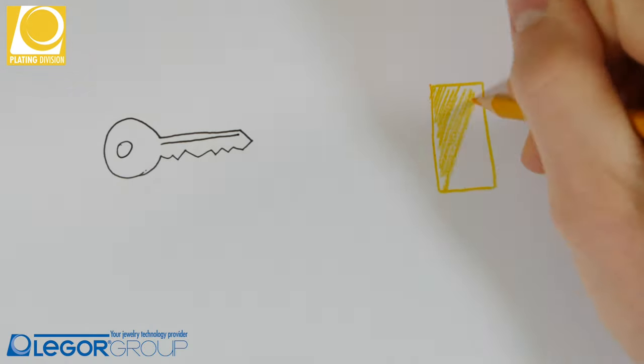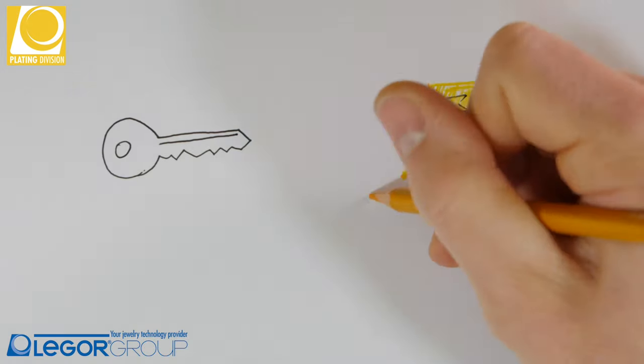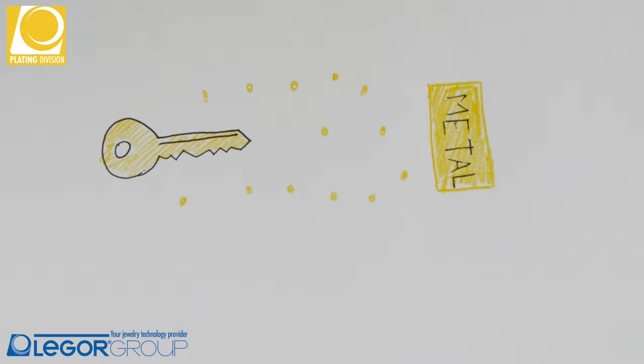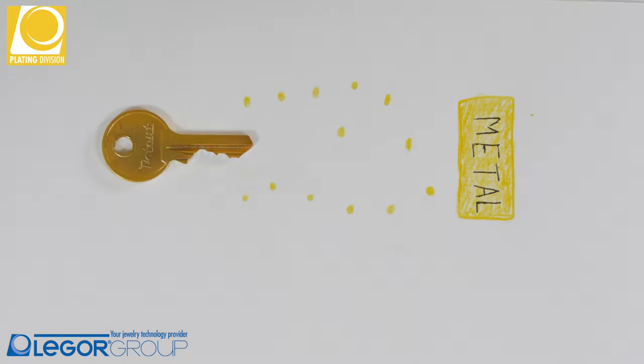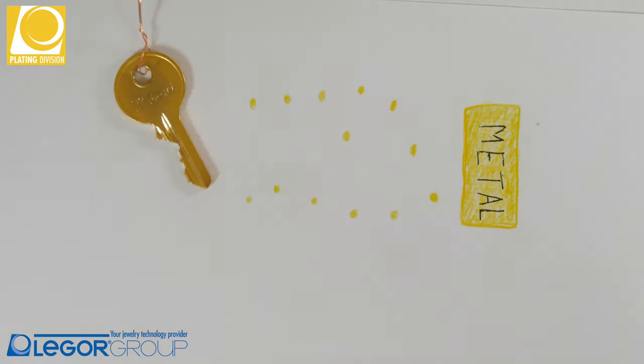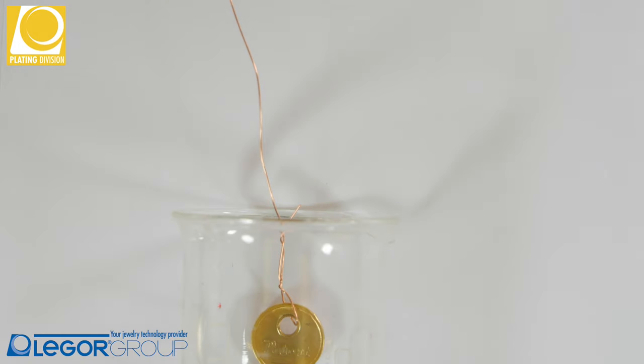Electroplating is the process of covering an object with a thin layer of metal by electrochemical deposition. Bath plating, otherwise known as immersion plating, is the most common and conventional form of electroplating.